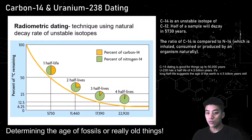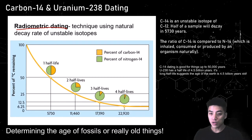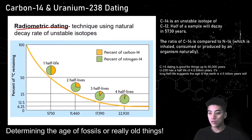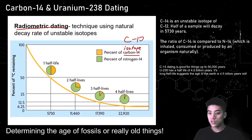Now we'll discuss how scientists are able to determine the age of really old things. You might read that archaeologists have found fossils estimated to be 50,000 or 2 million years old — but how do they know? They use a technique called radiometric dating, comparing the percentage of carbon-14, which is an isotope of carbon-12, and over time it will decay. Carbon-12 has 6 protons, 6 neutrons, and it's stable.